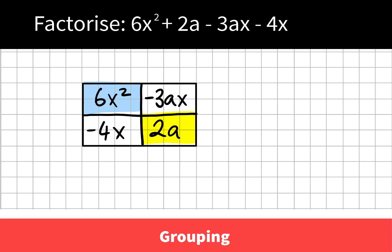Now if we look along the top row, is there any numbers or letters that are in common with 6x squared and negative 3ax? We can see that 3 goes into both 6 and negative 3. So 3 is there, and the letter x is common to both terms.